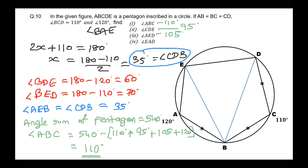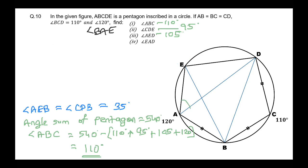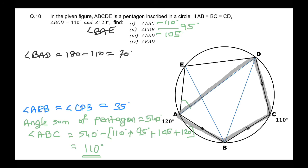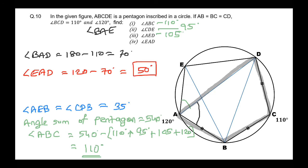Now for angle EAD, we need to join the line AD. Looking at cyclic quadrilateral ABCD, angle BAD equals 180 minus 110, which is 70 degrees, because opposite angles are supplementary. So our angle A of 120 degrees is divided into two parts: one is 70 degrees and the other is angle EAD. Therefore, angle EAD equals 120 minus 70 degrees, which is 50 degrees. This is our fourth answer.